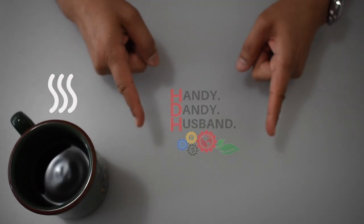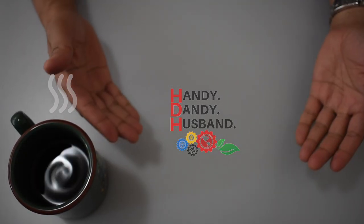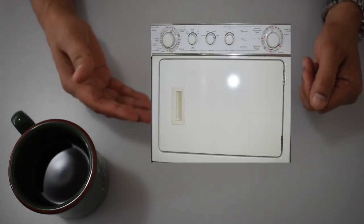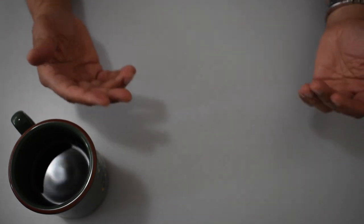Hi viewers, welcome again to Handy Dandy Husband. Today we are investigating a Whirlpool stackable apartment dryer that takes a very long time to dry a load.